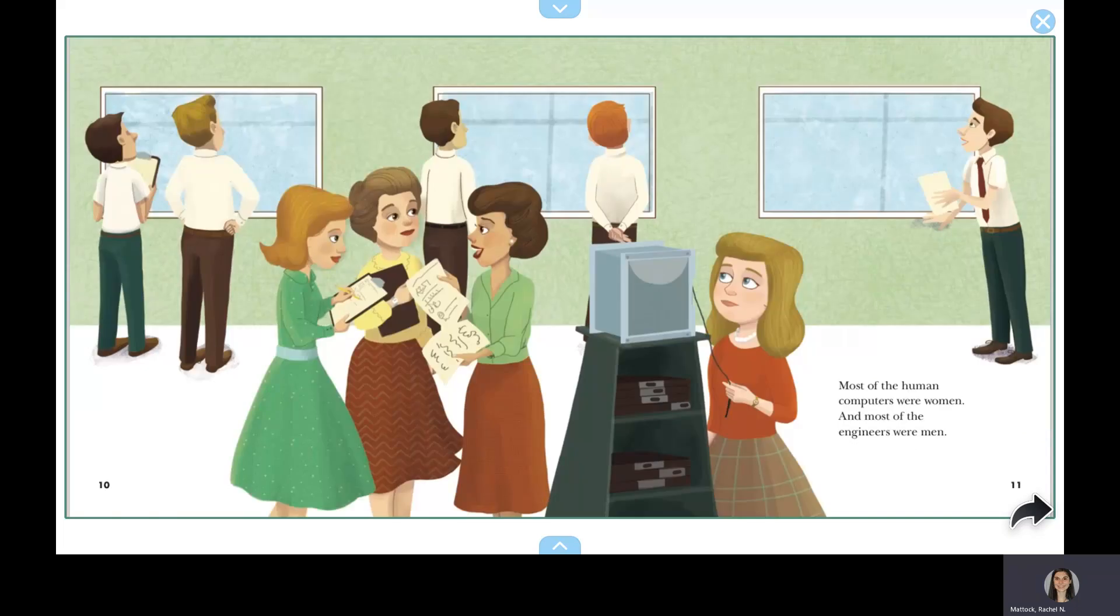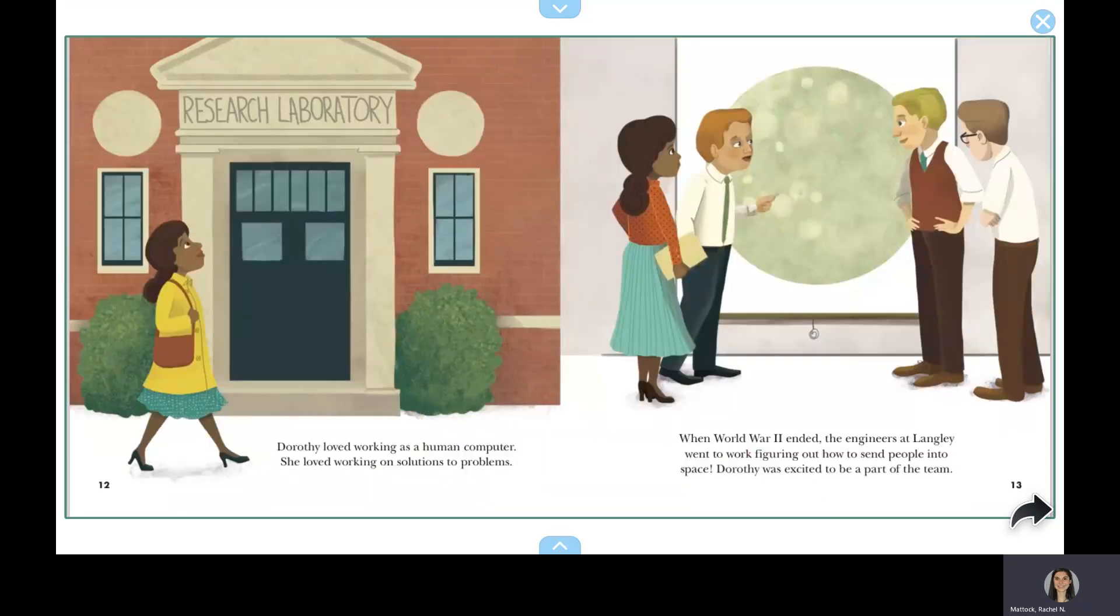Most of the human computers were women, and most of the engineers were men. Dorothy loved working as a human computer. She loved working on solutions to problems. When World War II ended, the engineers at Langley went to work figuring out how to send people into space. Dorothy was excited to be a part of the team.